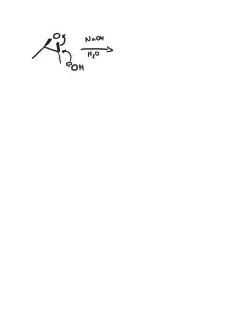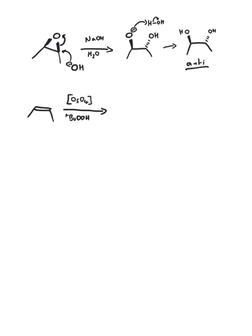If you think back to other methods we have used to make diols, you might recall that opening an epoxide will give you anti-diols, whilst the osmium tetroxide hydroxylation gives you syn-diols. This is very important, because now we have control over which stereoisomer we can make.